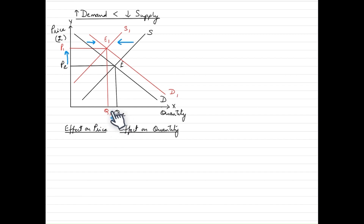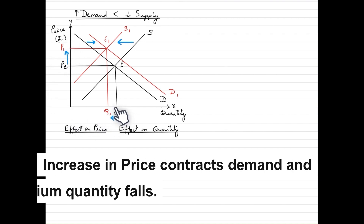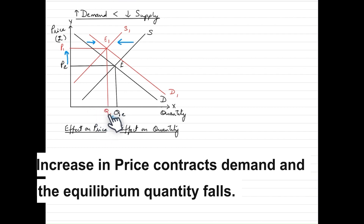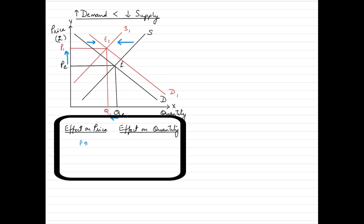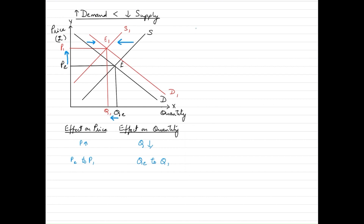The quantity in this market has gone down, simply because many buyers find it difficult to buy this commodity at such a high price and restrain from purchasing it. Hence the equilibrium quantity falls. The overall impact: prices have gone up from Pe to P1, whereas quantity has gone down from Qe to Q1 — because the increase in demand was smaller than the decrease in supply.